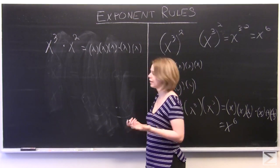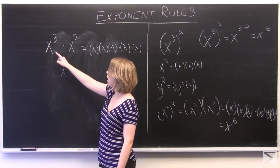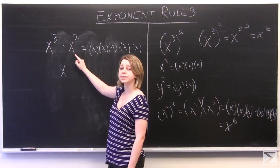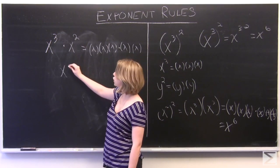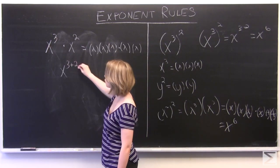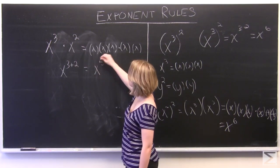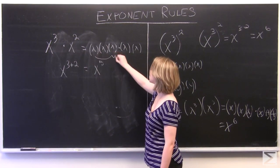And so this creates another really simple rule for us. Every time we have two quantities with the same base multiplied together, you simply add their exponents. So 3 plus 2 will be x to the fifth, which is five iterations of x, just like above.